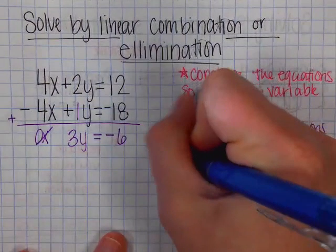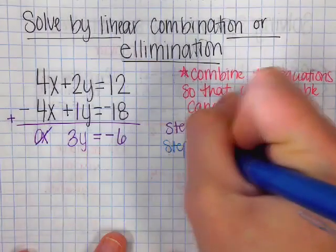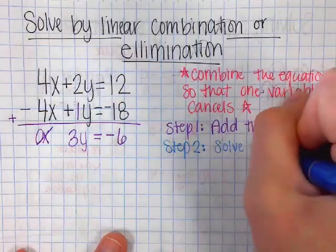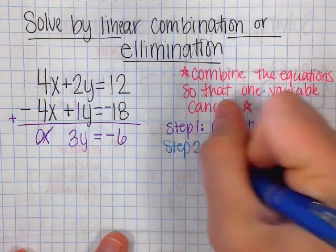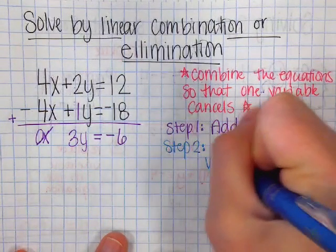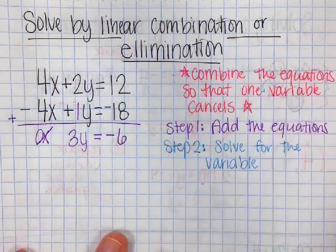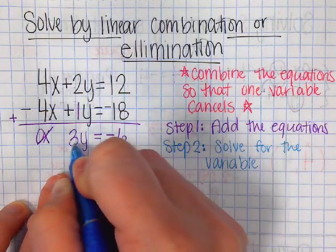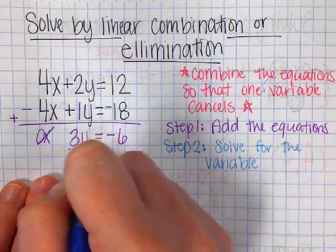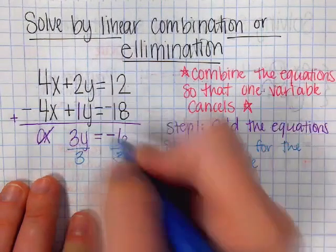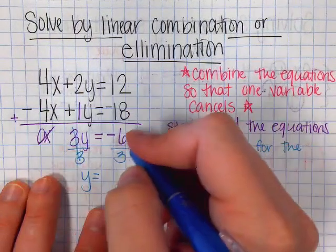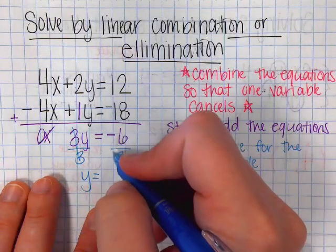The next thing I need to do is solve for the variable. So then 3 times y equals negative 6. The opposite of multiplying by 3 is divide by 3.